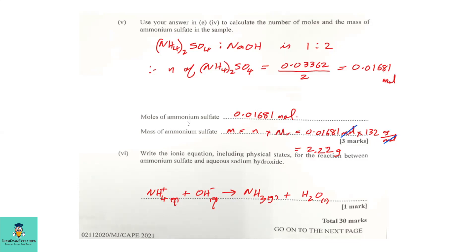So, we now know the moles of ammonium sulfate. We can now find the mass of ammonium sulfate. So, the mass is equal to moles times molar mass, which gives us the answer 2.22 grams.